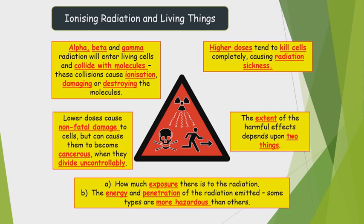Alpha radiation is similar to a helium nucleus. Beta radiation is similar to an electron. Gamma radiation is part of the electromagnetic wave spectrum.